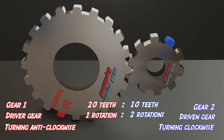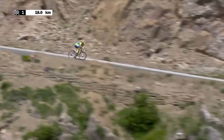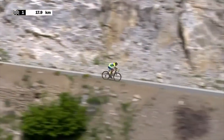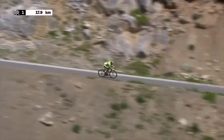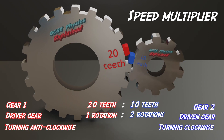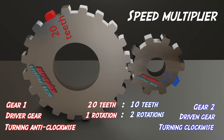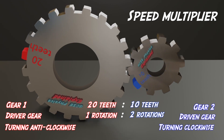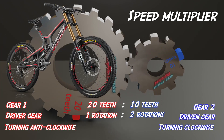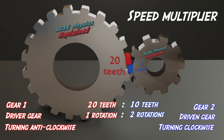This gear setup is called a speed multiplier, because the driven gear goes faster than the driver gear. If you were on a mountain bike, this would be a high gear, like 15th gear. The gears rotate tooth for tooth.